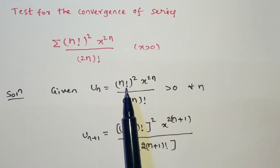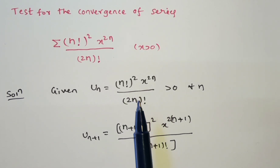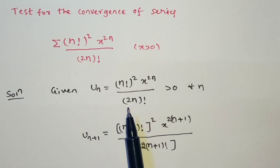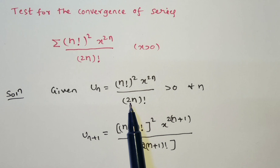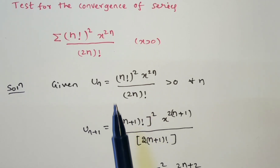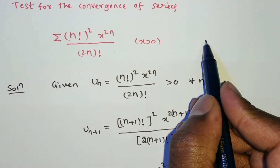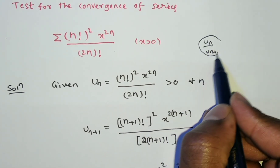Now the series contains factorials, so we have to go for the ratio test. When the series contains factorials, the ratio test is the best method. In the ratio test we need to find u_n divided by u_{n+1}.